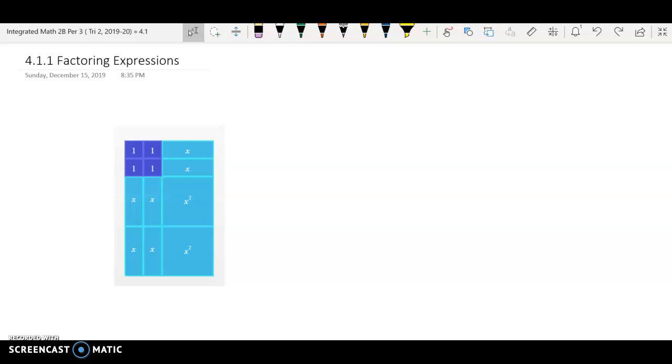This is a quick review on how to factor to show that the area of the sum is equal to the area as the product of the sides. Here you have a set of algebra tiles making a rectangle.